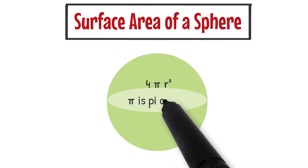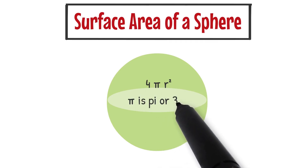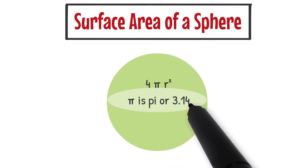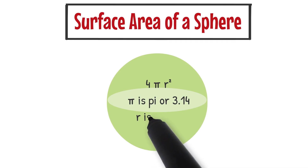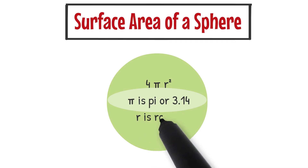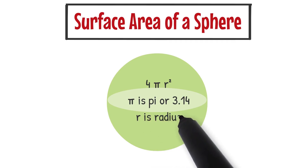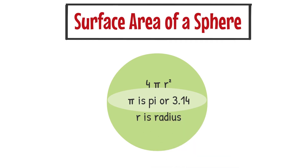Pi, when written as a word, is spelled as the letters P-I. In our examples today, we're going to use the abbreviated decimal version of pi, which is 3.14. R is the radius of the sphere.